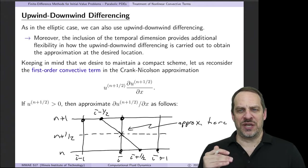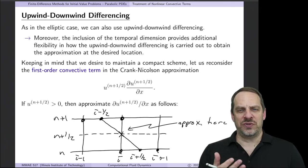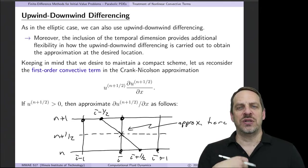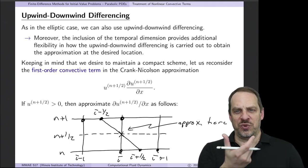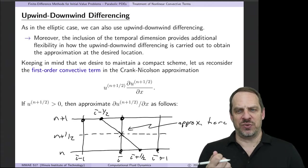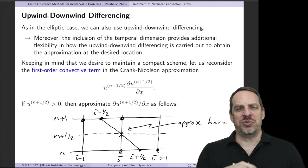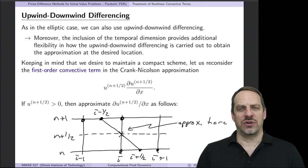In the elliptic case, the sacrifice we made in going with upwind differencing was that while it improved the diagonal dominance and therefore the iterative process to get the solution, the upwind differencing is only first-order accurate if we want to keep it compact — just i, i plus 1, and i minus 1. Here we're going to keep it compact, but we'll be able to take advantage of the time aspect as well in order to get a second-order or at least nearly second-order scheme.